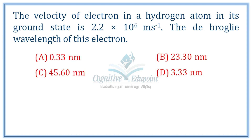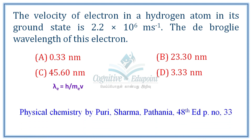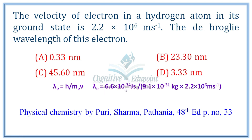Next question: The velocity of an electron in a hydrogen atom in its ground state is 2.2 × 10⁶ meters per second. Find the De Broglie wavelength of this electron. Using λ = h / (m × v): h = 6.6 × 10⁻³⁴ J·s, mass of electron = 9.11 × 10⁻³¹ kg, velocity = 2.2 × 10⁶ m/s. The answer is 0.33 × 10⁻⁹ m, or 0.33 nanometers. Correct answer: A.